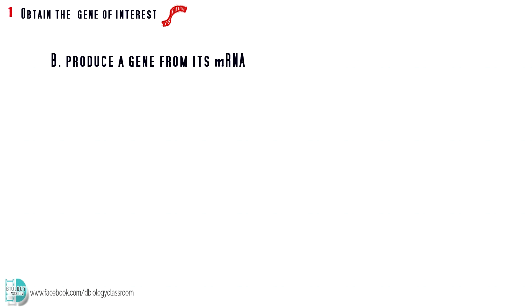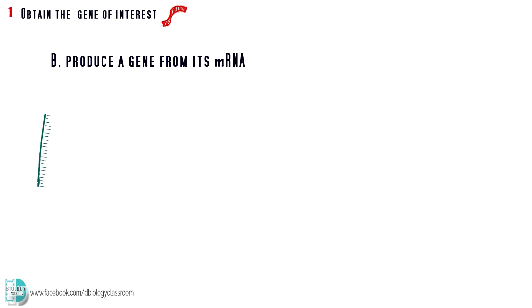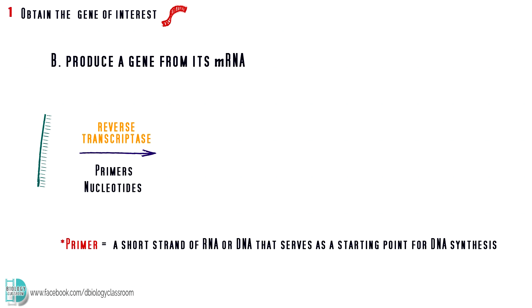You can also produce the DNA by using its mRNA. mRNA for insulin gene is extracted from the cytoplasm of beta cells in pancreas. Since beta cells are specialized in producing insulin, they carry out transcription and translation for that gene. So, there are a lot of insulin mRNA in the cytoplasm. mRNA is incubated with enzyme reverse transcriptase, primers, and DNA nucleotides.